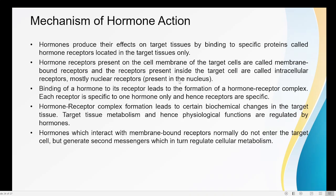The receptors present inside the target cell are called intracellular receptors. Some receptors may be present inside the cell in the cytoplasm — these are the intracellular receptors. So in hormone receptors we find two different types: one is the extracellular or membrane-bound receptor, and the other is the intracellular receptor present inside the cell.